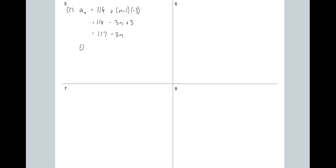Once you've pegged on that, the rest isn't too bad. We have zero equals 117 minus 3n. Add 3n to both sides: 3n equals 117. Divide both sides by 3 and you get 39 — so it took Zoe 39 seconds to reach Zoe. And that's how you do it.